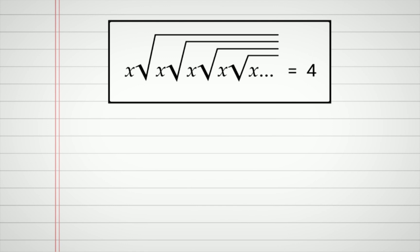So for the very first video, we're going to deal with this weird-looking equation: x times square root of x times square root of x times square root of x, and so on. That's equal to 4, and we're going to find x.